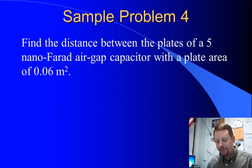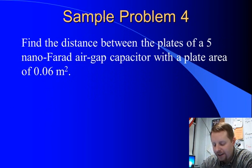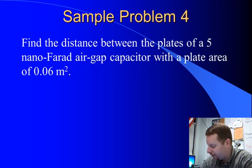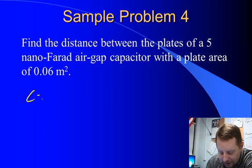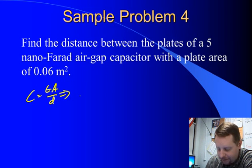Let's take a look at one more. Find the distance between the plates of a 5 nanofarad air gap capacitor with a plate area of 0.06 square meters. Before looking for the distance, let's start off with C equals epsilon A over d, and solve for d, the separation. So d equals epsilon A over C.